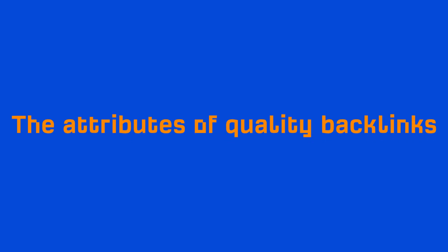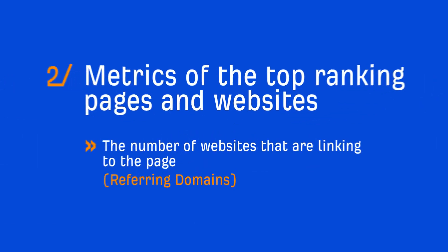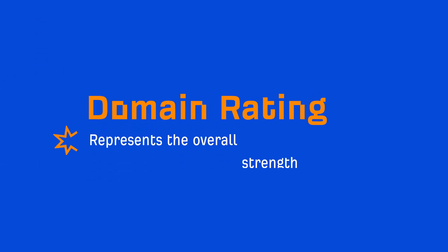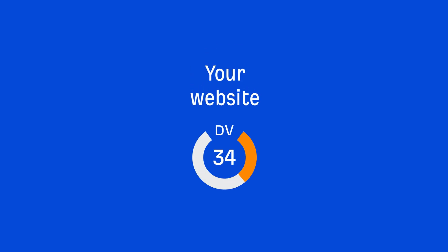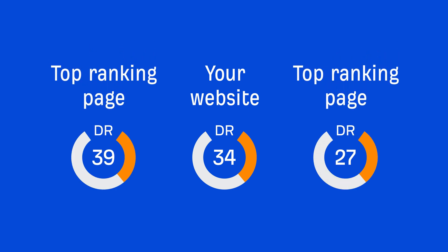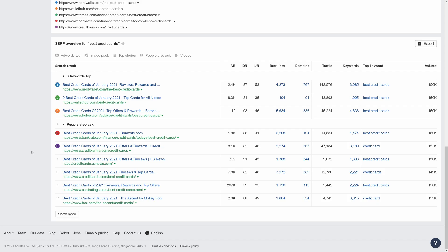At this point in the course, we haven't talked about the attributes of quality backlinks, but our link building module that's coming out in a couple of weeks should help you answer this question. The second metric is website authority. At Ahrefs, we call this domain rating, which represents the overall strength of a website's backlink profile. Very generally speaking, you should be going after keywords where your website's DR is in a similar ballpark range as the top ranking pages, or at the very least, one of the top ranking pages should be in the same range as your website.